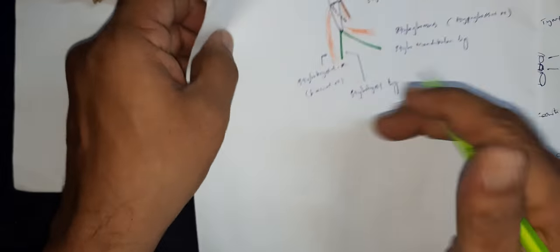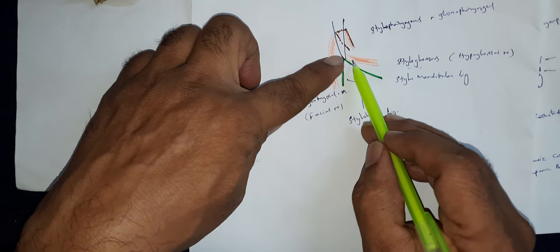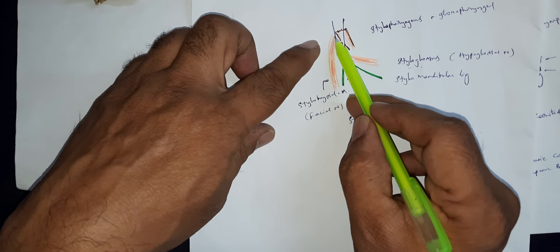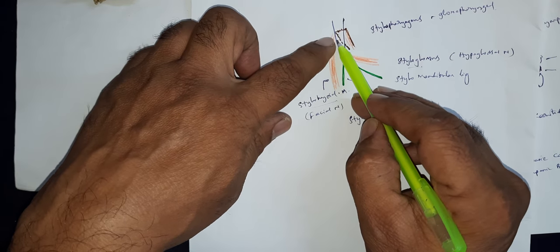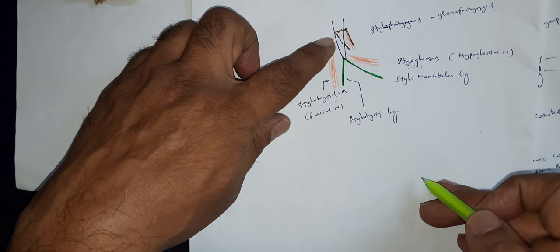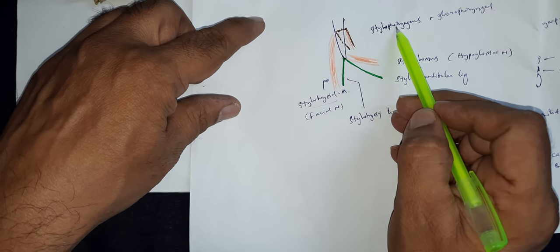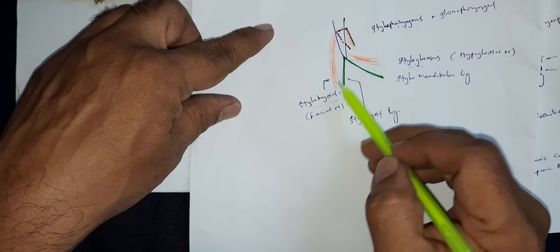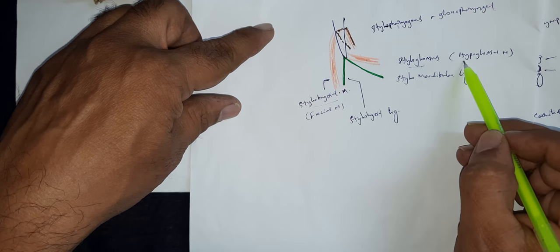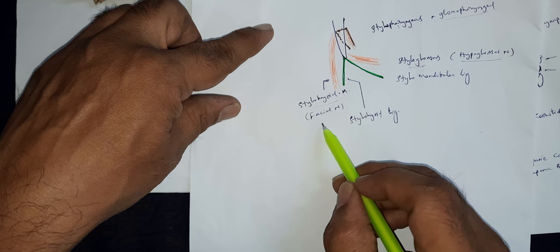Now coming to the styloid process: it gives the following attachments. From its tip anteriorly, the styloglossus muscle originates and inserts on the tongue. From the middle of the posterior side, the stylohyoid muscle takes origin and inserts on the hyoid bone. From the medial surface and part of the anterior surface, the stylopharyngeus muscle takes origin and goes to the pharynx. These three muscles are supplied by three different nerves: styloglossus is innervated by the hypoglossal nerve, stylopharyngeus by the glossopharyngeal nerve, and stylohyoid muscle by the facial nerve.